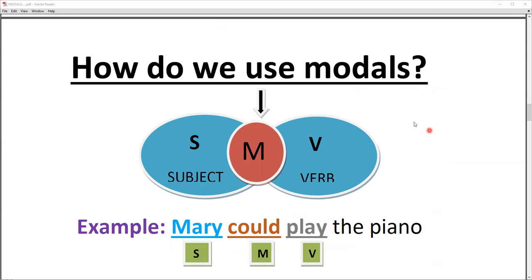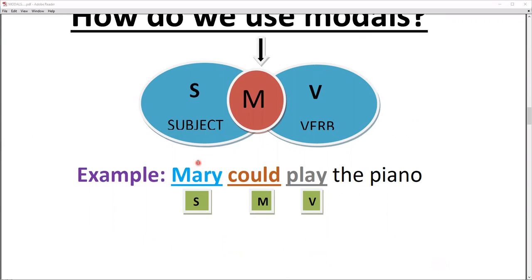How do we use modals? As you know, there is a sentence. In a sentence, we need subject and verb. Before verb, we will apply modal. Here subject, here verb, and middle, model. So here the example: Mary could play the piano. Subject is Mary, could is a model, verb is play, and the piano is object. So we usually use verbs before the model.